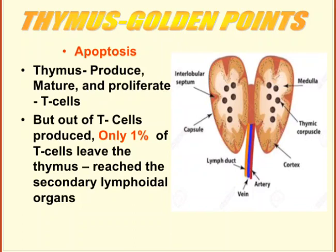Just as the Indian military protects our nation, the thymus protects our body from pathogens. The Indian military gives training to soldiers at places such as Dehradun or Ooty. After getting proper training, those soldiers who performed best are sent to the border for protection. In the same manner, the thymus gland gives training to T-cells. Out of 100 T-cells, those that get the best training are sent out to reach the secondary lymphoid organs, where the trained T-cells fight against pathogens.